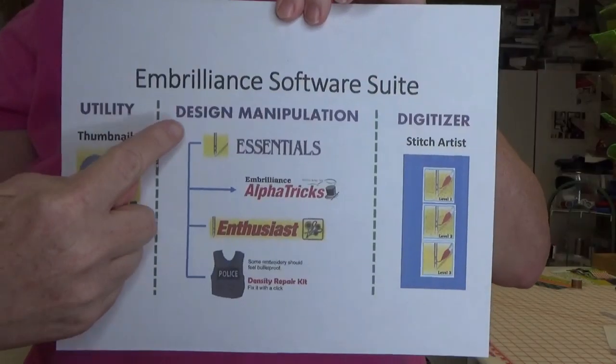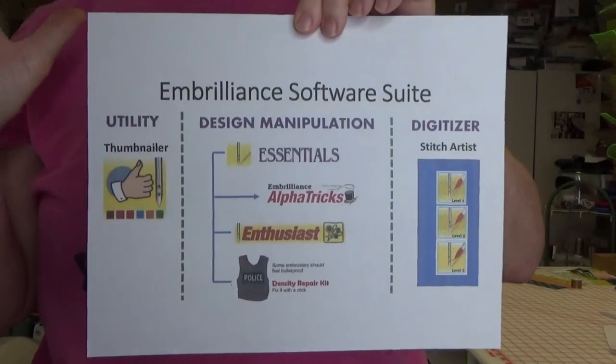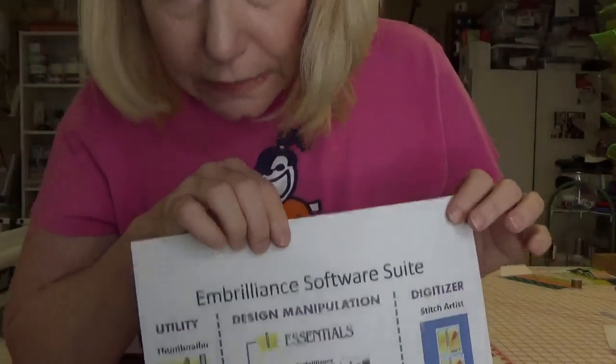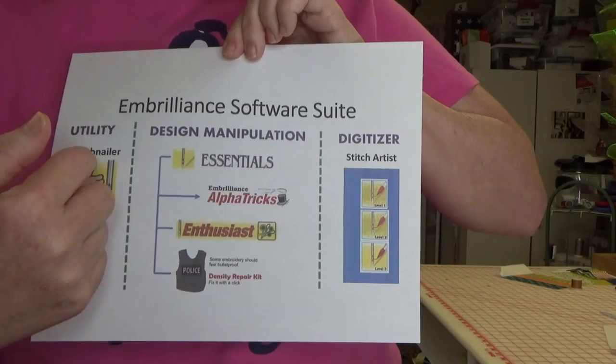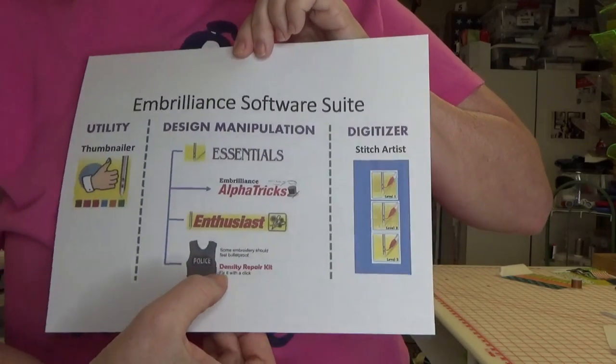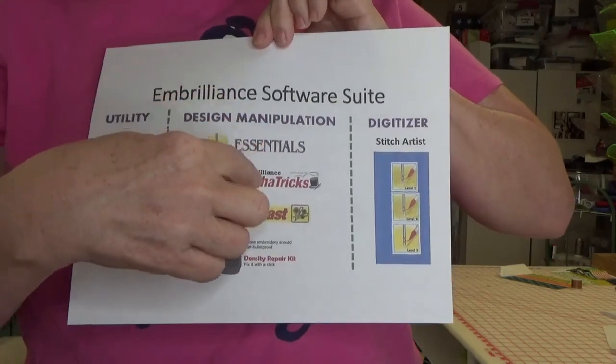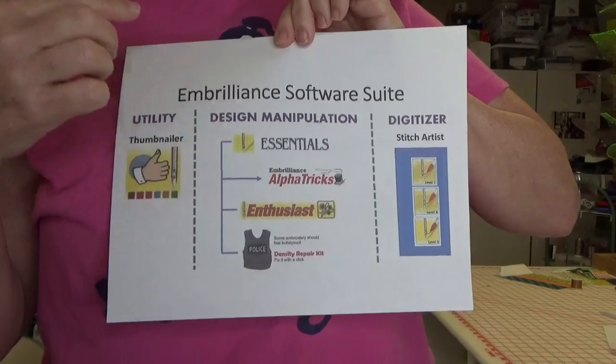That's kind of like what Embrilliance is. Now that you've got that concept of an entire suite of applications that function independently but integrate together — that's exactly what Embrilliance does. I've kind of separated this into three parts. Embrilliance does what I've put as design manipulation. Inside design manipulation, they have Essentials. AlphaTrix works with Essentials but will work independently. They have Enthusiast. They have the Density Repair Kit. Each one of these does design manipulation of some sort.